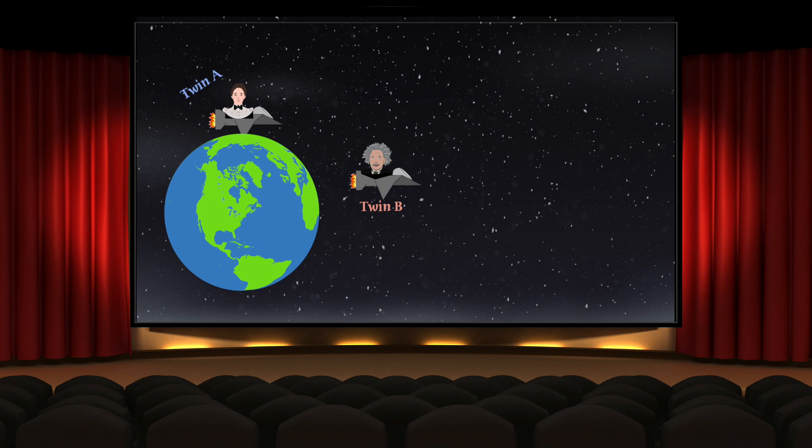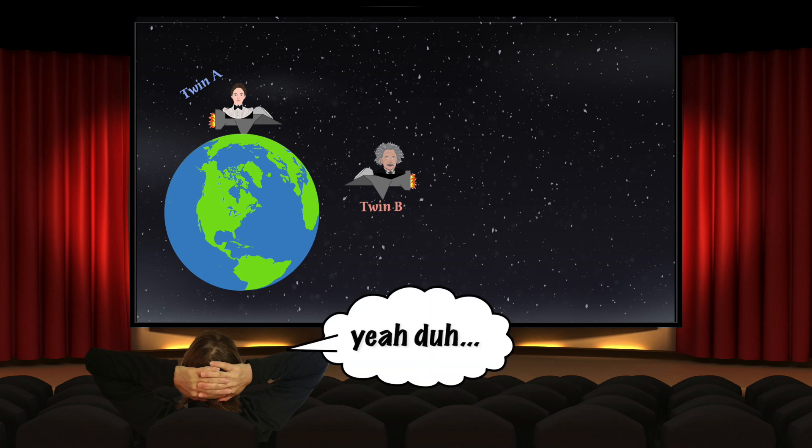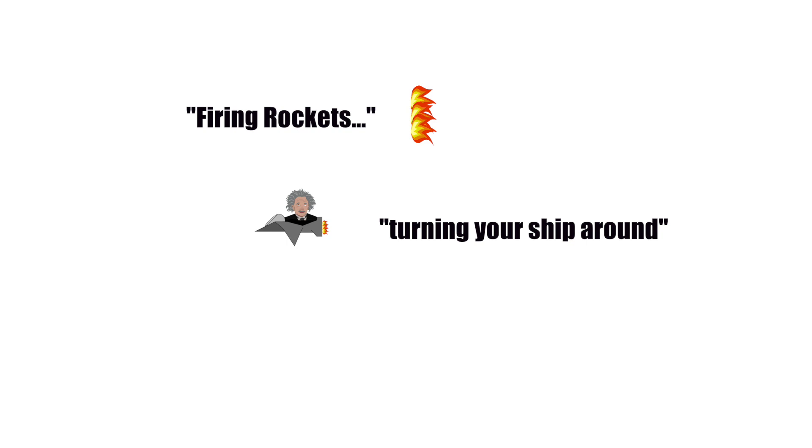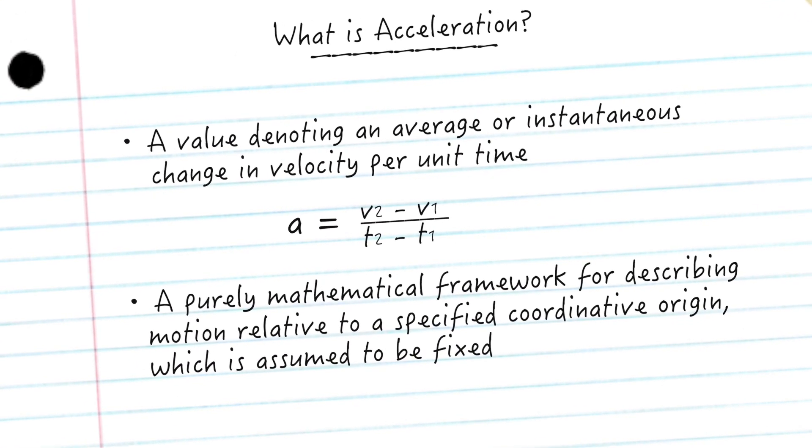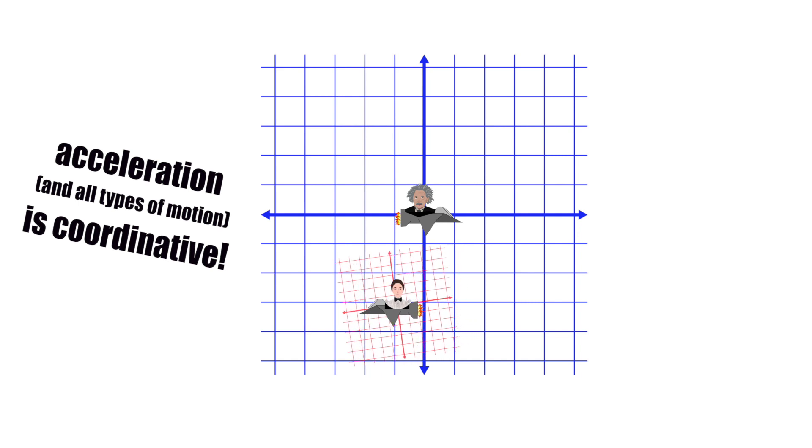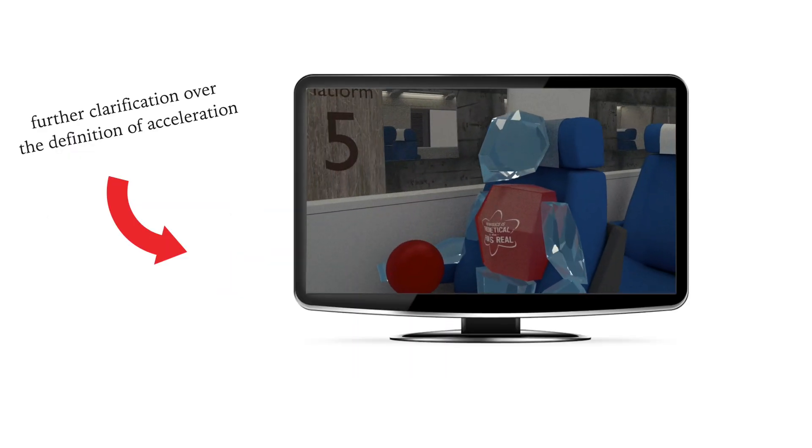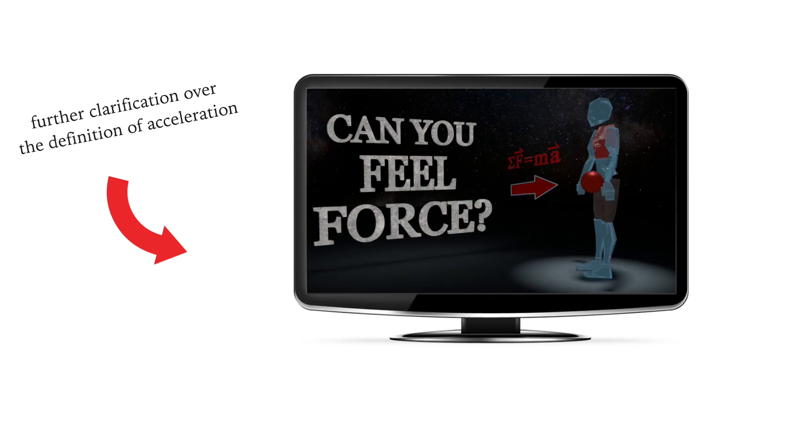At this point you might think, well hey, isn't it obvious who accelerated? If the space twin has to fire his rockets or turn his ship around, then obviously both twins will agree he's the accelerating one, right? But you have to remember that firing rockets or turning ships around does not constitute acceleration. Acceleration is purely coordinative. It's a description of motion given relative to an observer, keyword being relative. The tendency for people to confuse acceleration with other phenomena is explained in greater length in a prior video of ours, Can You Feel Force?